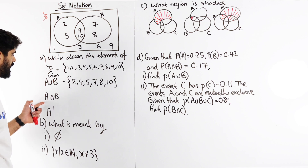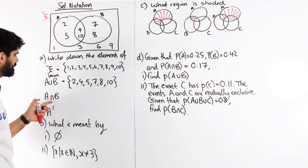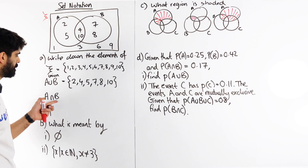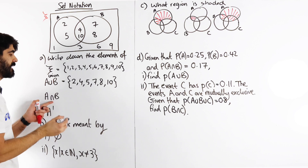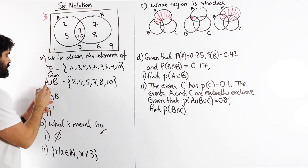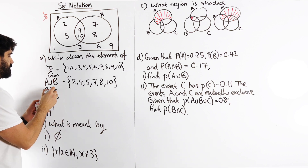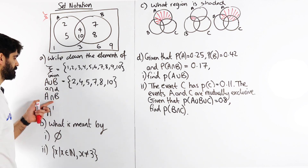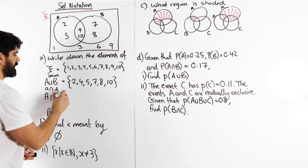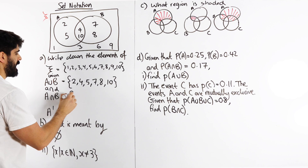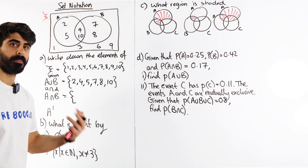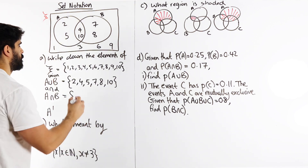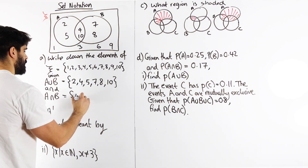The next one: A intersection B — that ∩ meaning 'and'. This is 'and'. What's in A and B? What's in both of them? 4 and 10 only.